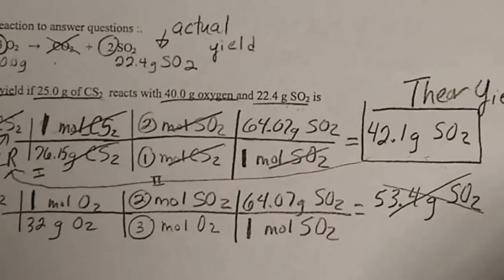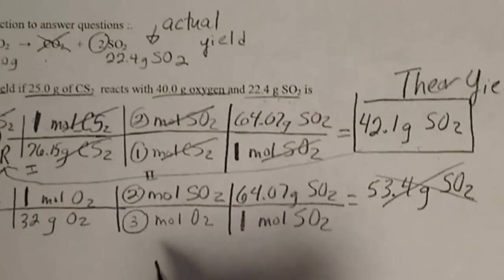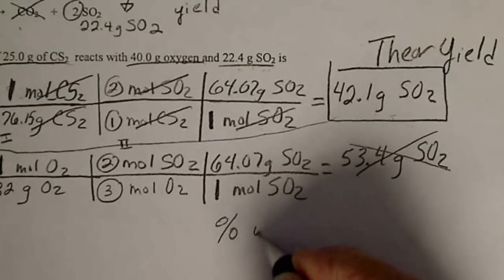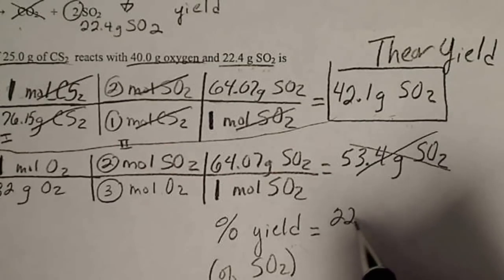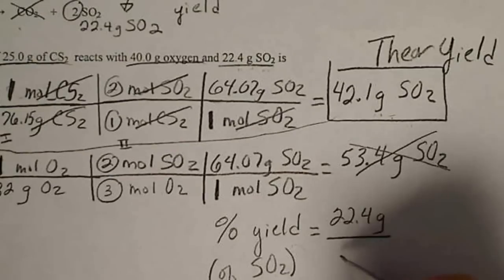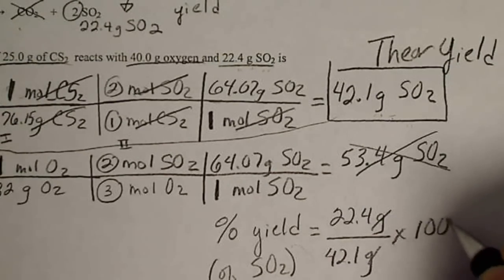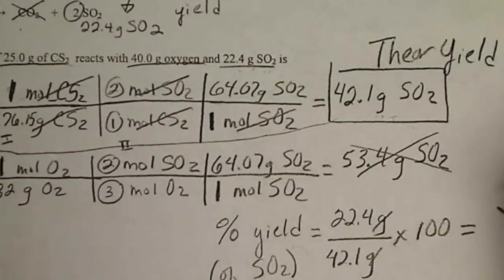And so now the percent yield, this value, the actual yield has to be given to us. To do the percent yield of SO2, that's the actual yield, which is 22.4 grams, divided by the theoretical yield, and that's going to cancel the two units. Once we do that, we get 53.2 percent.